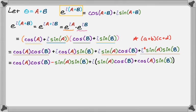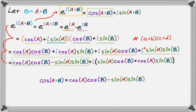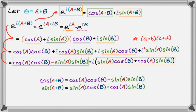This expression equals cosine of a plus b plus i times sine of a plus b, as we set up originally. Since we have two equal complex numbers, their real parts must be equal and their imaginary parts must be equal. Therefore: cosine of a plus b equals cosine·a cosine·b minus sine·a sine·b, and sine of a plus b equals sine·a cosine·b plus cosine·a sine·b. Those are the sum formulas for sine and cosine — you'll definitely want to memorize those, as you'll use them a lot.